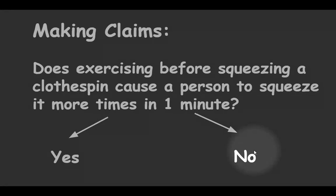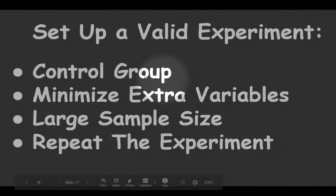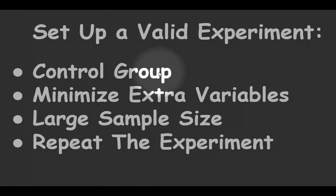Okay, so if you were to set up any experiment, there are some very important things to consider. First thing you want to do is you want to set up a control group. For example, you wouldn't just have everybody exercise before the clothespin, you would have half the group exercise and then you would have the group not do exercise as a control group.